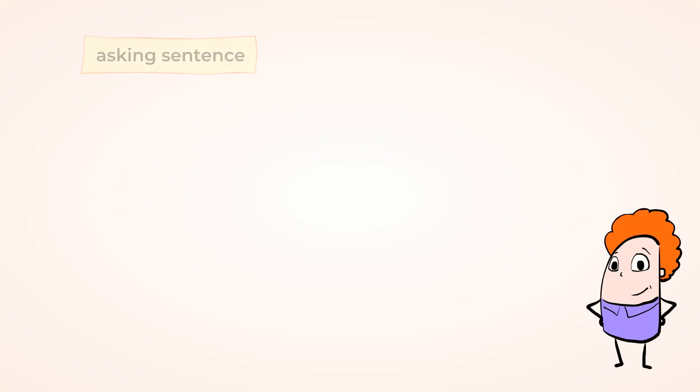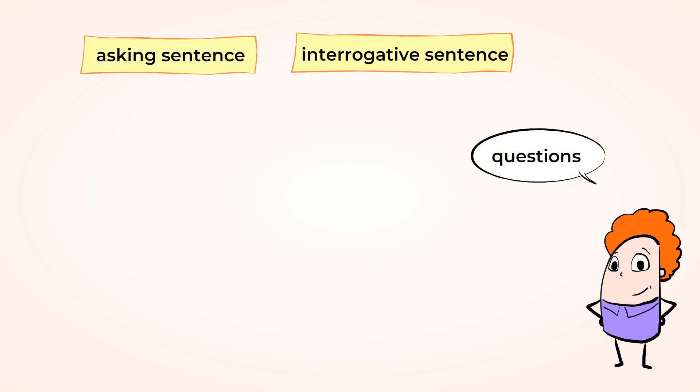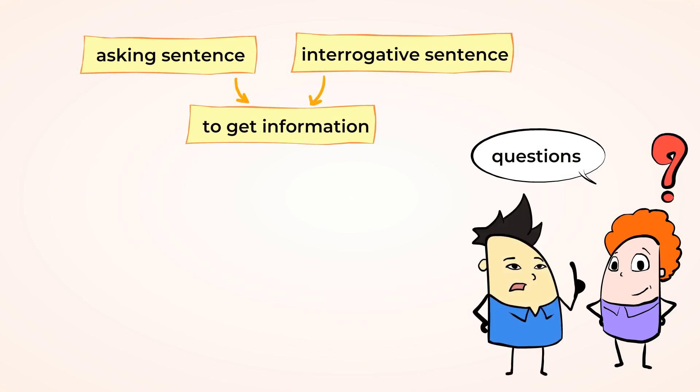The next type of sentence is an asking sentence or an interrogative sentence. And these are also called questions. We use asking sentences to get information. When we use an asking sentence, it means we want someone to answer us.